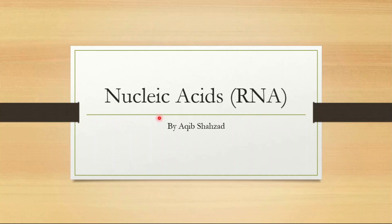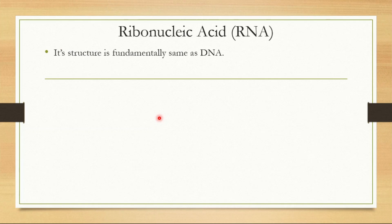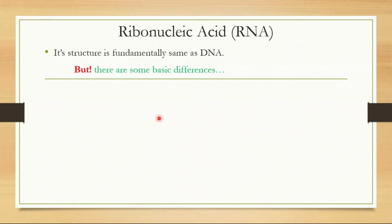Assalamualaikum and a very good morning to all of you. This is the third part of nucleic acids and here we are going to study about RNA — ribonucleic acid. Its structure is fundamentally the same as DNA. Like DNA, it has a backbone made up of sugar and phosphate, but there are some basic differences between DNA and RNA. RNA is mostly present in the cytoplasm and it is produced from DNA by a process called transcription.